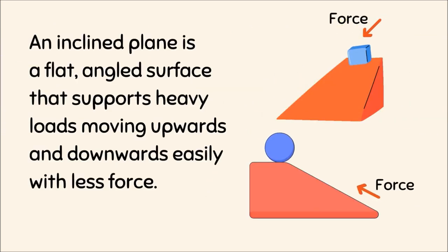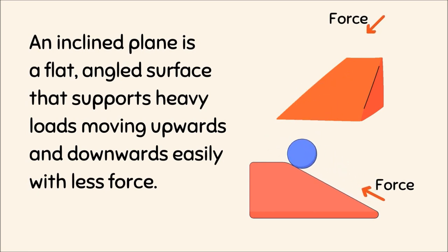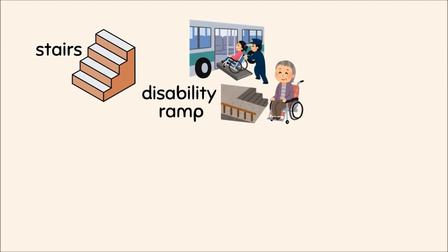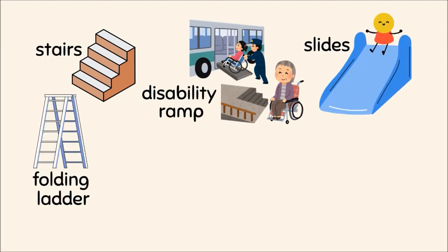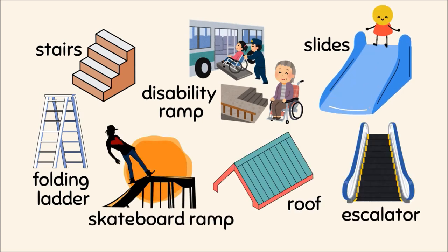Inclined plane — an inclined plane is a flat, angled surface that supports heavy loads moving upwards and downwards easily with less force. Examples of inclined planes: stairs, disability ramp, slides, folding ladder, skateboard ramp, roof, and escalator.